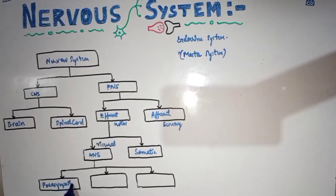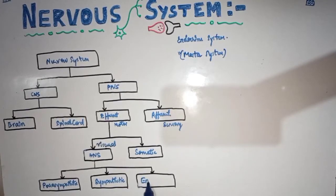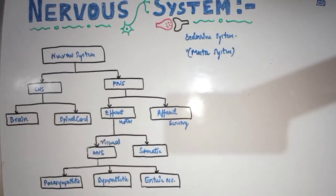The ANS is divided into three parts: parasympathetic, sympathetic, and finally the enteric nervous system, which is present in the GI tract. The efferent nerve fibers supply effectors — for example, skeletal muscles.